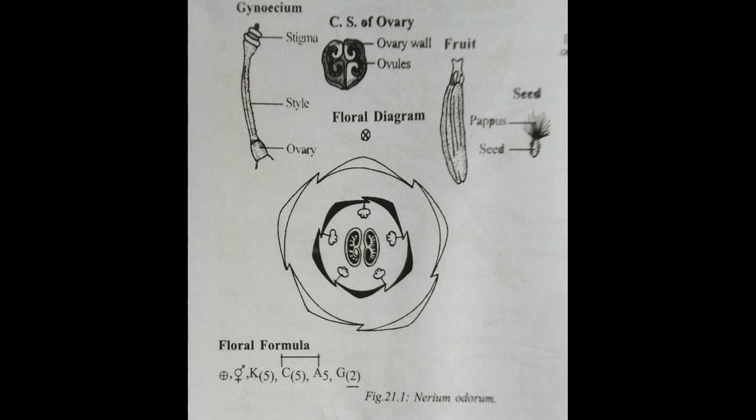These are the vegetative as well as floral characteristics of the Apocynaceae family. You can see the figure — this is an example of the Nerium plant, showing both habit and flowers as well as gynoecium, ovary, and the floral formula.